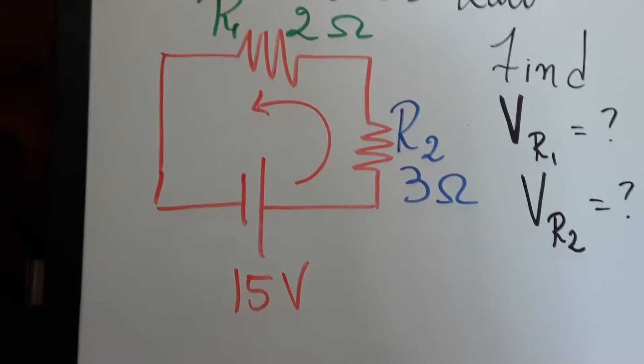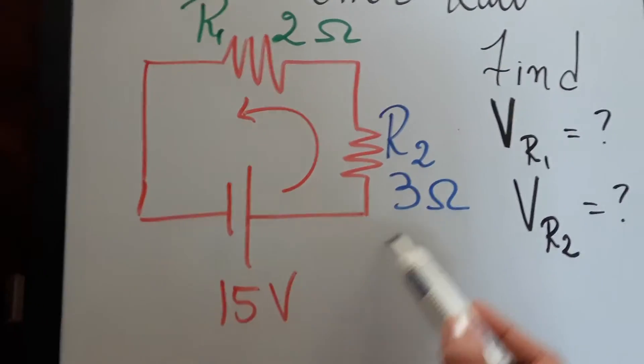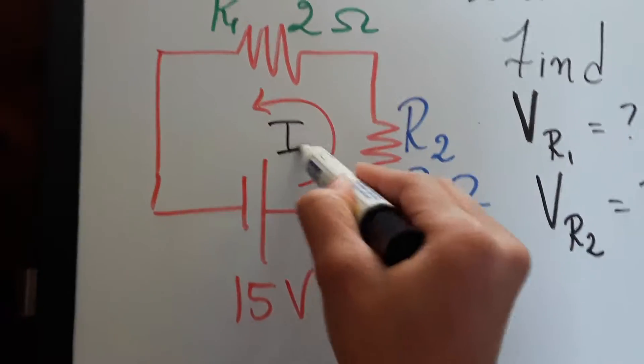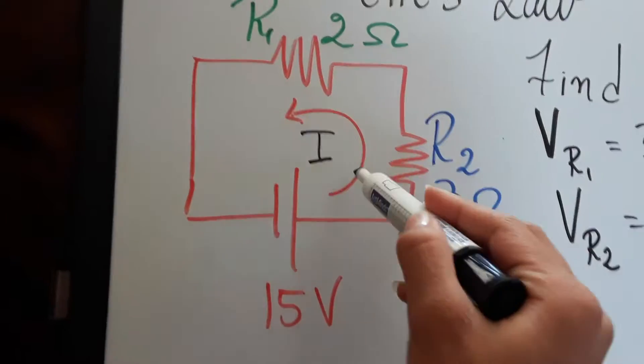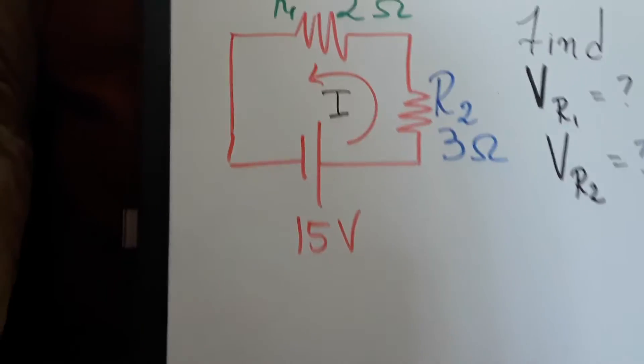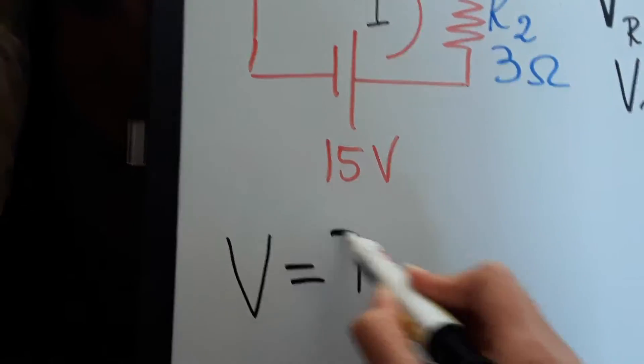The current when you have a series circuit is the same throughout, so you're going to have one current flowing through. So you're going to have one I, and you're going to have Ohm's Law, remember is V equals I times R.